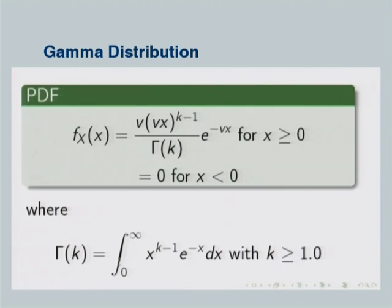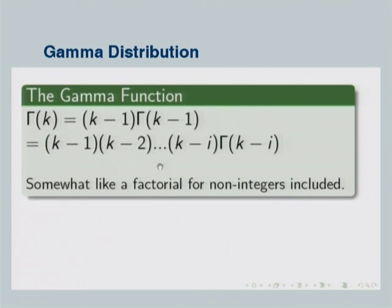We now go to the last distribution today: the gamma distribution. Its PDF is defined only for positive x values, with parameters p (or V) and K. The gamma function Γ(K) appears in the denominator — it is like the factorial function but can be evaluated for non-integers as well. You can also define the incomplete gamma function, which is used to find the CDF of the gamma distribution.